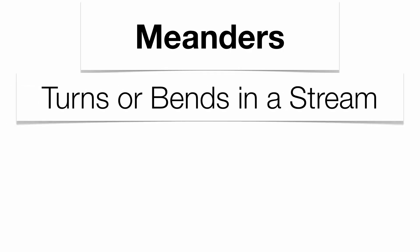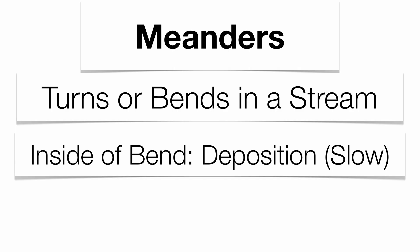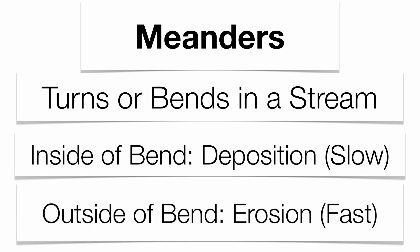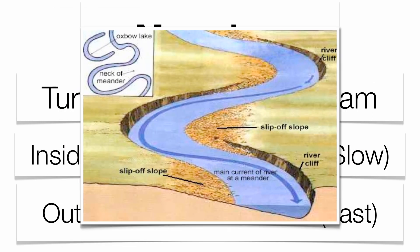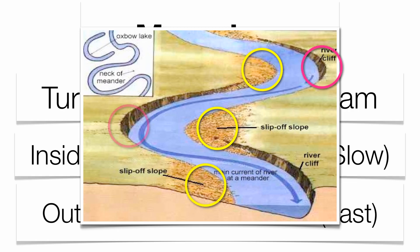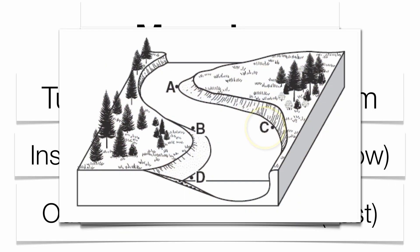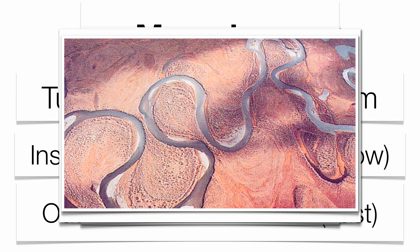Meanders are simply the turns or bends within a stream. Water travels at different velocities at different locations within the bend. On the inside of the bend, water tends to travel a little slower, so you tend to get deposition because it has lower carrying power. On the outside of the bend, you tend to get erosion because the water is faster and has greater carrying power. Point C in the diagram is where your erosion takes place on the outside of the turn. This photograph really shows the beautiful erosion and deposition relationship within a meander — the little white fragments on the inside of each bend are sandbars.